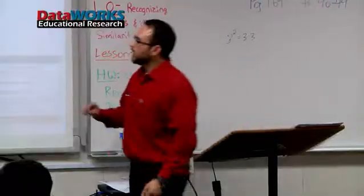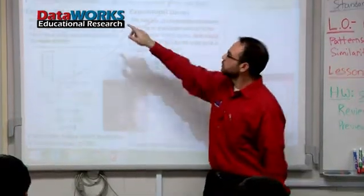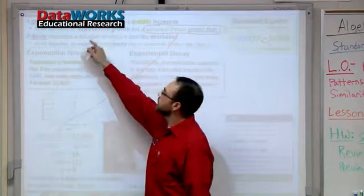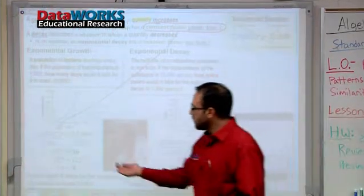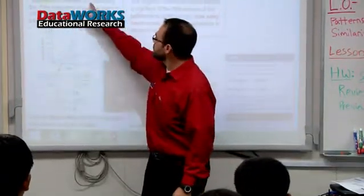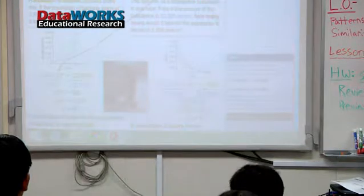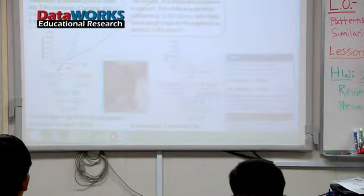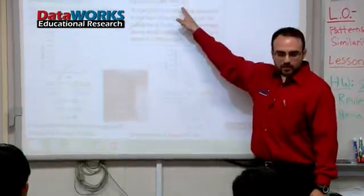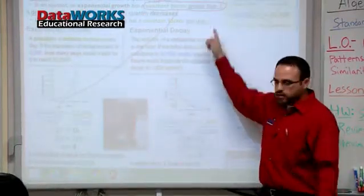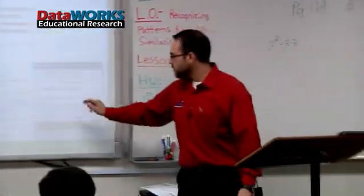In exponential growth, the constant factor is greater than 1. So let's read: exponential growth has a constant factor greater than 1. The constant factor right now is 2. Why is it 2? Because the bacteria doubles every day. Since this number is greater than 1, we can look at this equation and know that's exponential growth. Just real quick — take a look at the other side. This is called exponential decay. In exponential decay, the constant factor is less than 1 — in this case, one half.